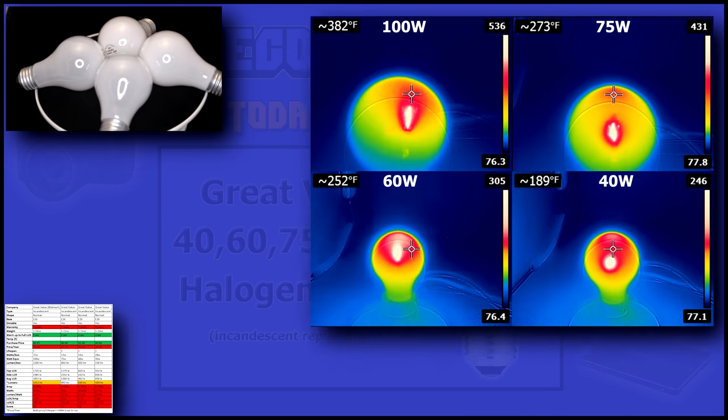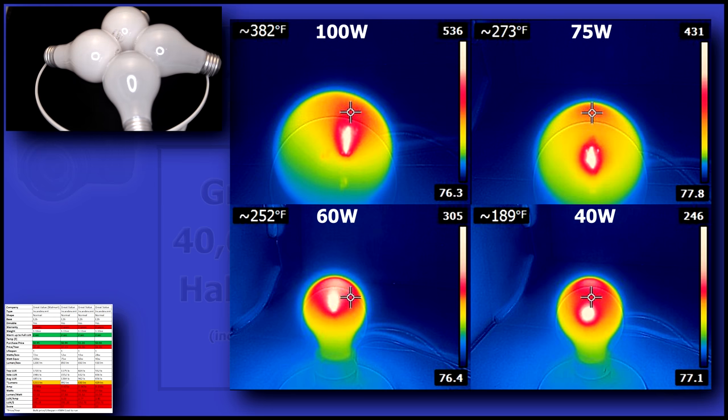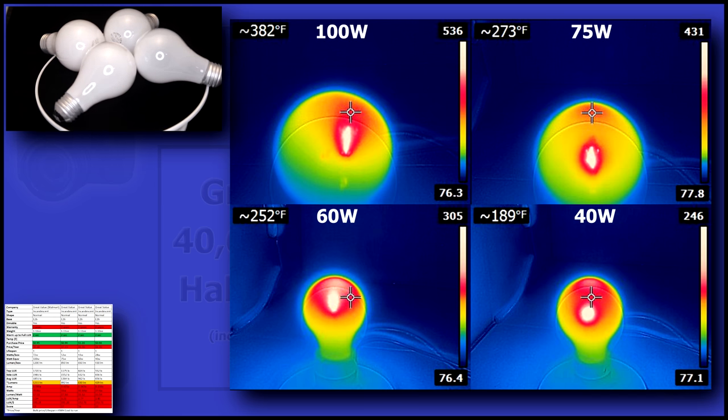One of the biggest drawbacks with these bulbs is the amount of energy lost to heat. As you can see on this thermal image, the 100 watt bulb was approaching 400 degrees.